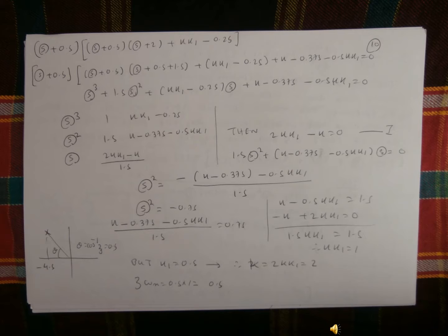So therefore that x² coefficient will be minus 0.75. So when you write down the equation: k minus 0.375 minus 0.5·kk1 divided by 1.5 equal to 0.75. So that gives k minus 0.5·kk1 equal to 1.5, and also minus k plus 2·kk1 equal to 0. By solving it, kk1 equal to 1. So kk1 equal to 1, but k1 is 0.5 already. So by solving, the k value will be 2.